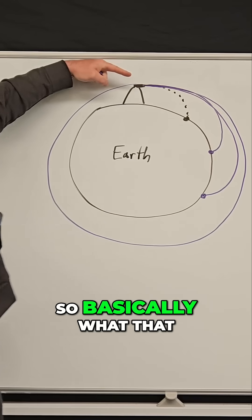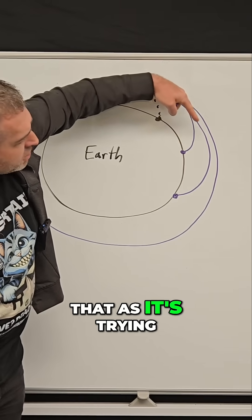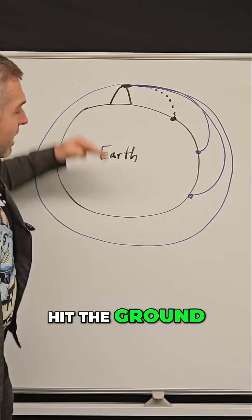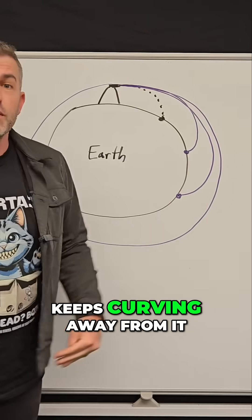So basically what that means is it's moving so fast that as it's trying to fall down and hit the ground, the ground itself just keeps curving away from it.